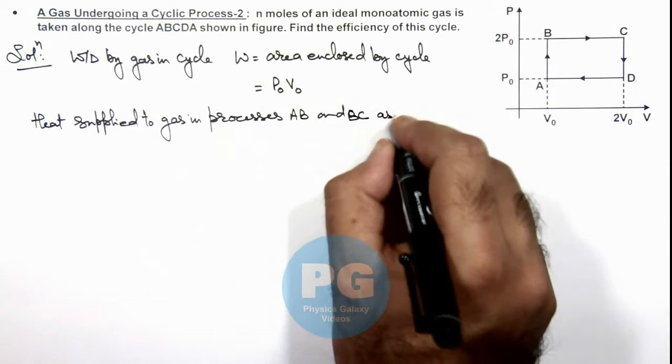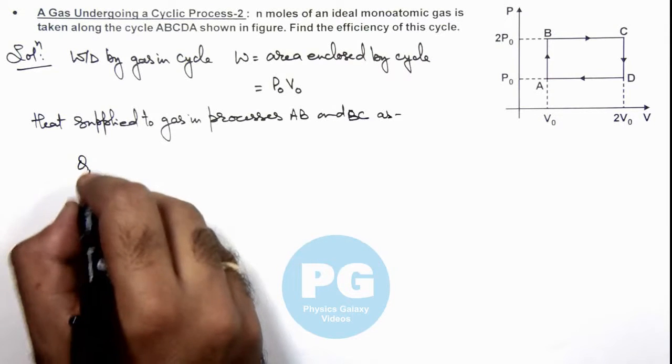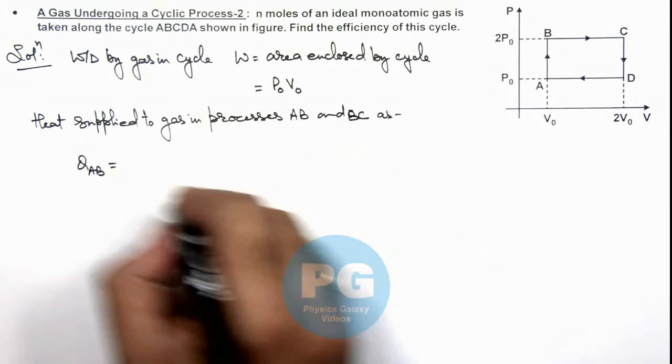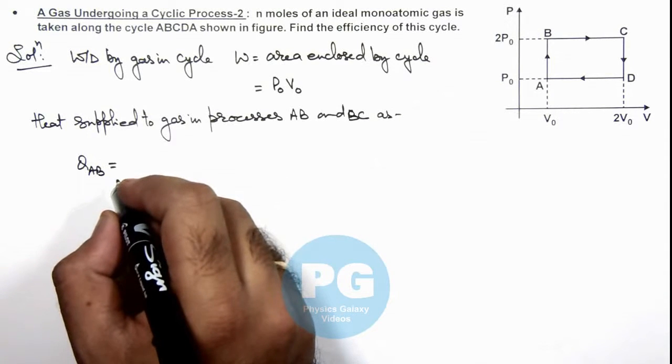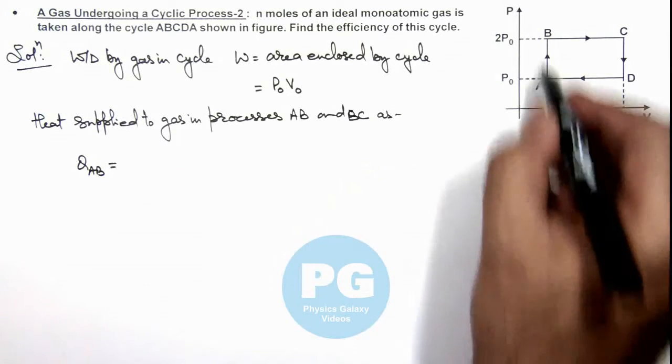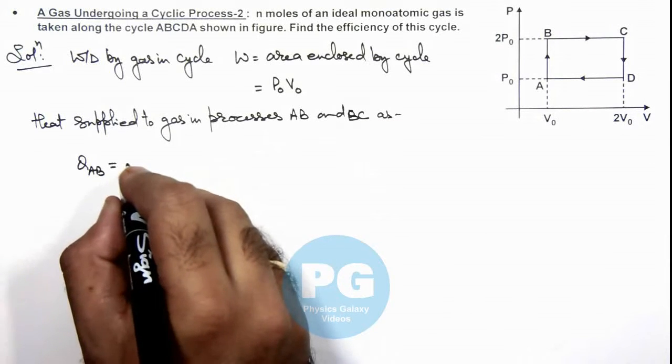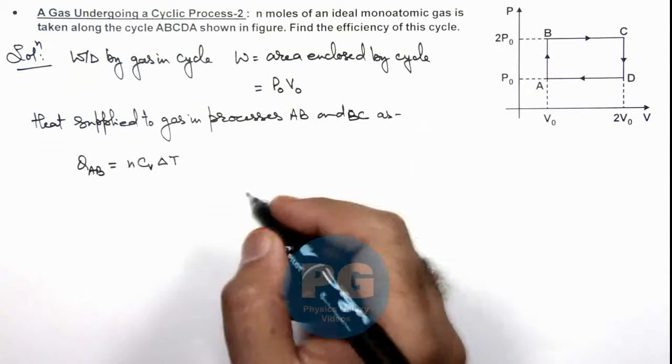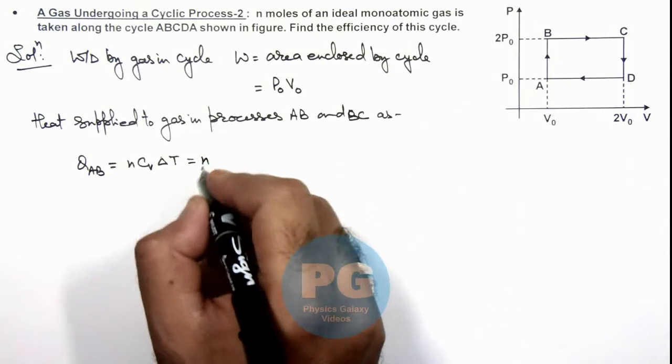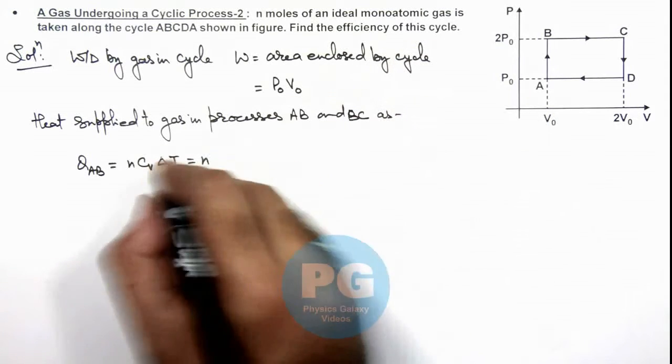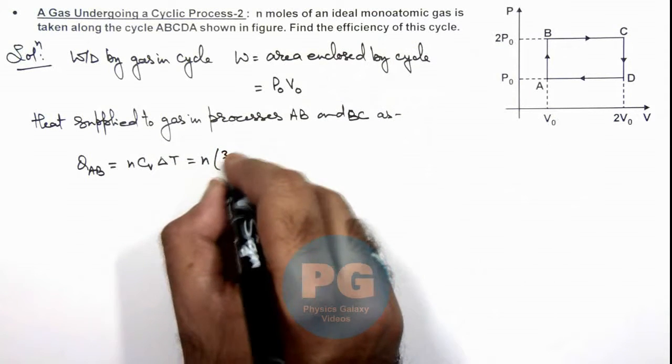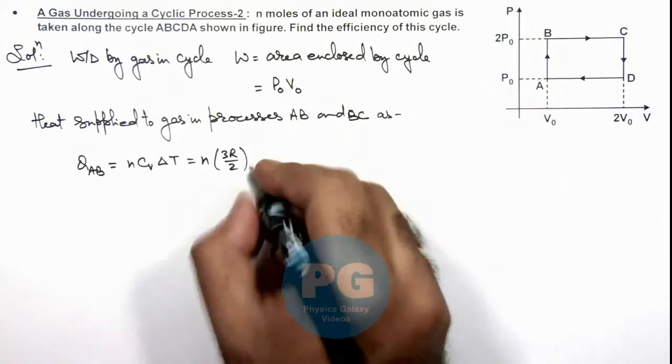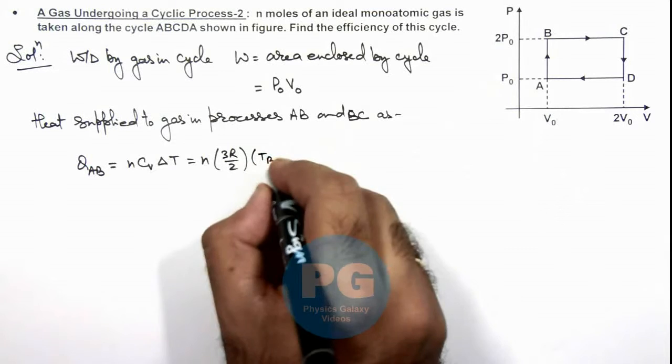For process AB we can write, this is an isochoric process, so here we can write AB as n Cᵥ ΔT. As here the volume is constant, so we can write n, and for a monatomic gas Cᵥ we can take as 3R/2, multiplied by T final minus T initial. This is Tբ minus Tₐ.